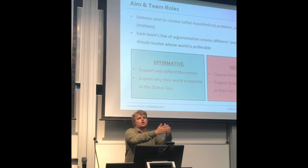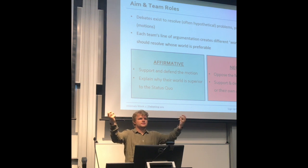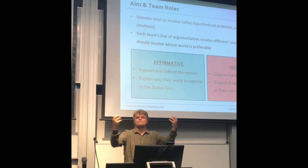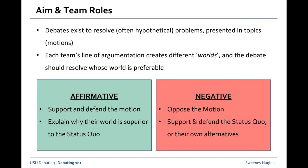The affirmative team on any given topic will have its points, and the negative team will have its own points, presenting a different picture of what the world would look like under the respective policies each team proposes. It is then the job of each team to try to outmatch the other. The affirmative team defends the motion, and the negative either supports the status quo or any alternative they come up with.